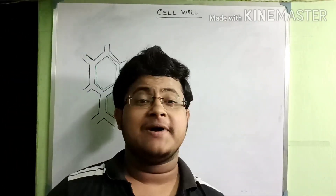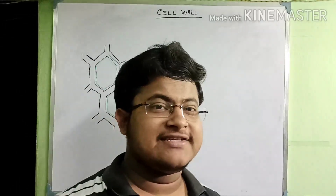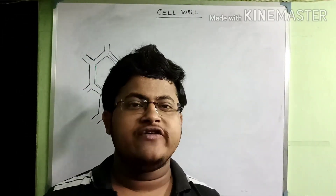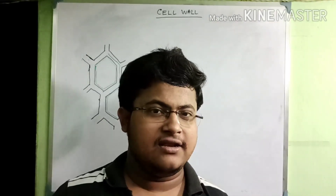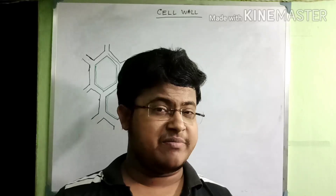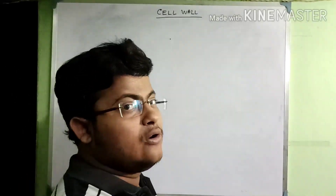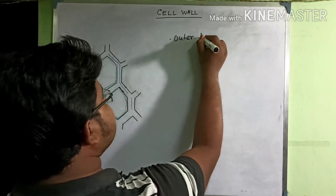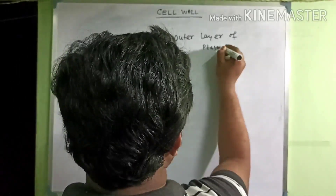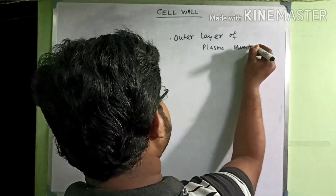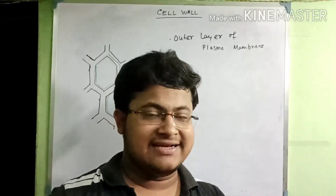Hello students, welcome to news biology. In this video we are going to talk about the ultrastructure of the cell wall. The cell wall is a non-living component which boundaries and covers the plant cell, present outside the plasma membrane of the plant. They are found in the outer layer of the plasma membrane and act as a protective covering.